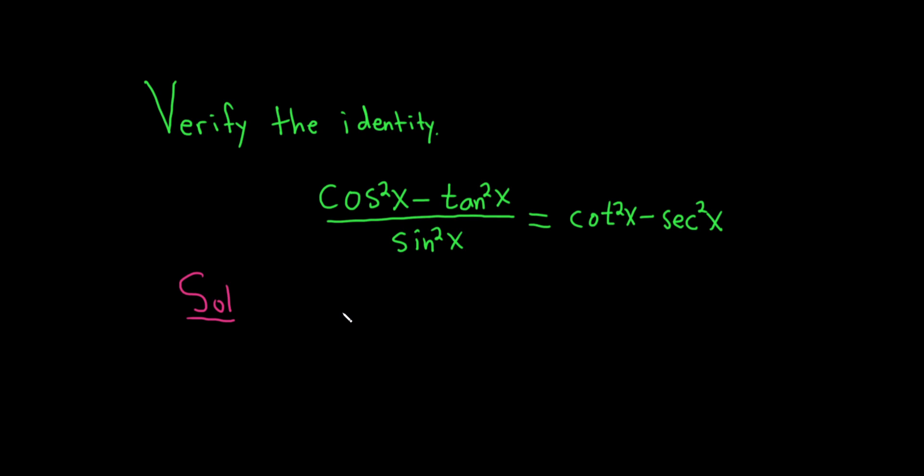So let's go ahead and start by writing down the left hand side. So cosine squared x minus tangent squared x, it's all being divided by sine squared of x.